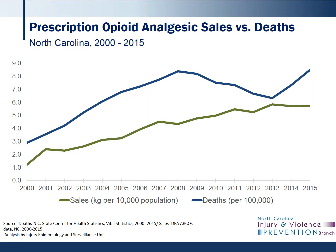The opioid sales data depicted in this slide comes from DEA ARCOS, the Automation of Reports and Consolidated Orders System, which is an automated comprehensive drug reporting system that monitors the flow of DEA controlled substances from their point of manufacture through commercial distribution channels to the point of sale or distribution at the dispensing or retail level — think of hospitals, retail pharmacies, practitioners, mid-level practitioners, and teaching institutions. The rising rate of prescription opioid analgesic sales in North Carolina mirrors the rise in deaths from prescription opioids. This same parallel is occurring nationally as well.